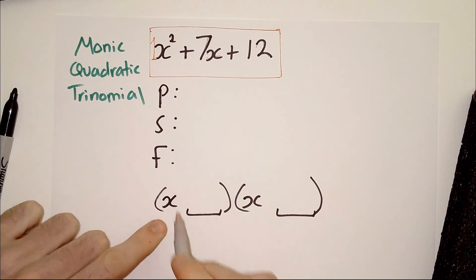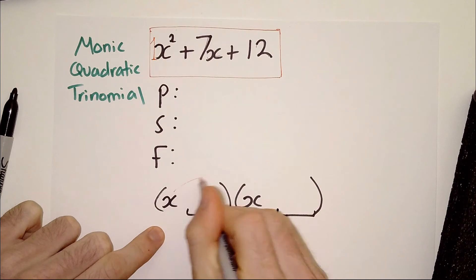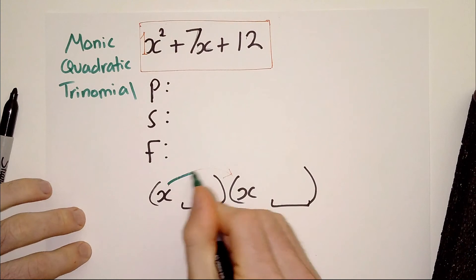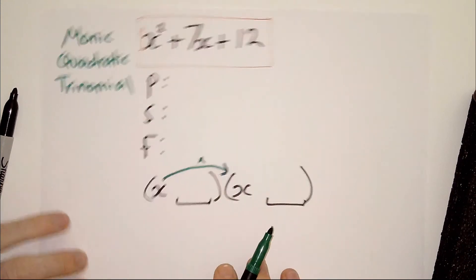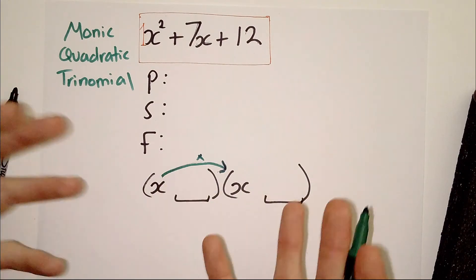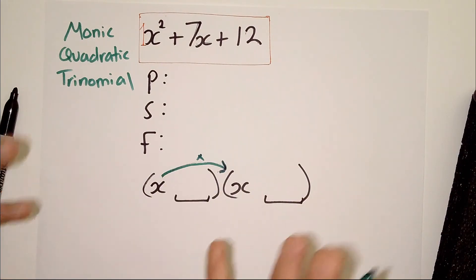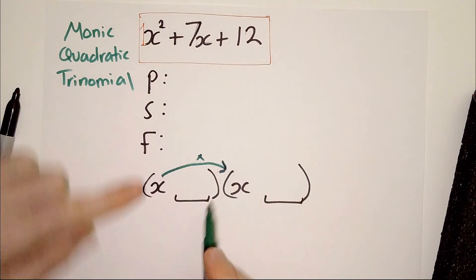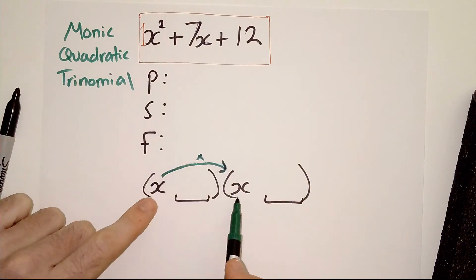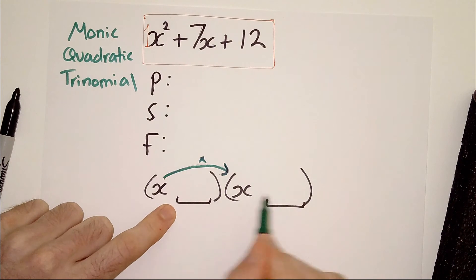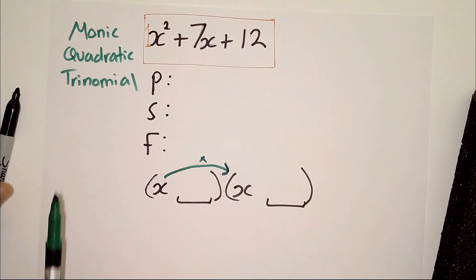And I know that the first term in each bracket is going to be x and x. And that's what you already know for sure because it's a monic quadratic. Because it's a monic quadratic, think about it like this. If we were undoing the factorization, if we were expanding, which is the opposite, we would be multiplying the x by this x. We would be multiplying x times x. Now, what's x times x? x squared. It gets you back to the original. That's the point. Factorizing doesn't actually change the value of what you have. It's just another way of expressing it.